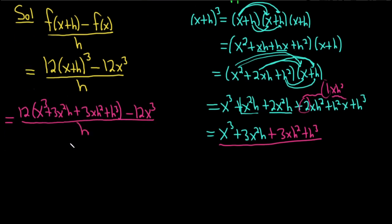So now we'll go ahead and distribute. Let me go to a different color. This is equal to. So 12 times x cubed will just give us 12x cubed. And then 12 times this 3x squared h. Well, 12 times 3 is 36. So this is 36x squared h.